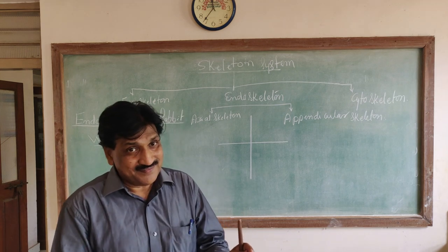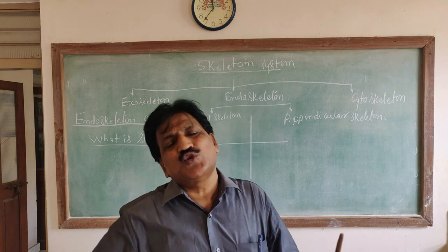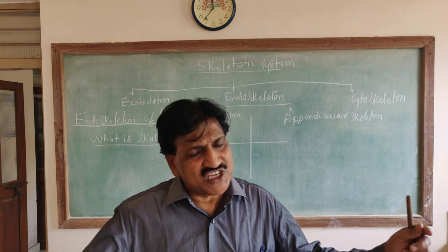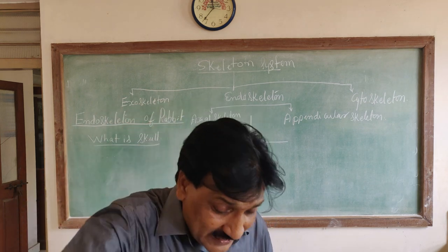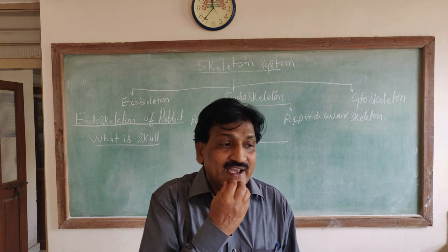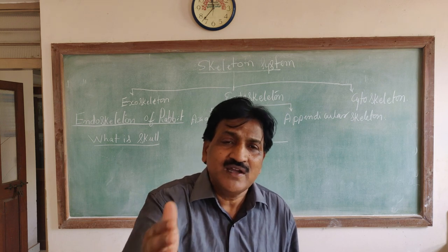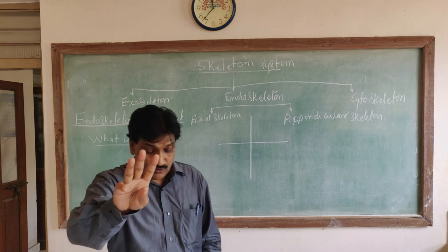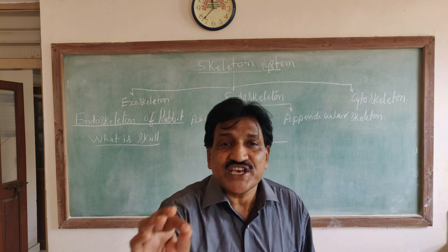Important questions: What is the skull? Write the important characters of the skull. For a 5-mark question, you need five to six points. Two-mark questions include: what is the foramen magnum, what is the zygomatic arch, and what is the dicondylic nature of the skull.